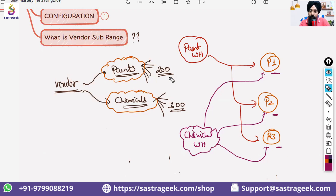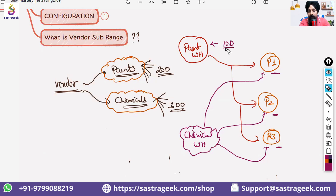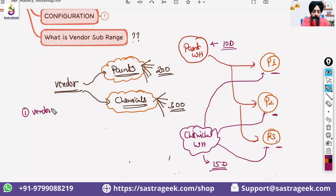If you are buying paints from the vendor, one set of data applies; if you buy chemicals, another set applies. For example, all paints have a delivery time of 10 days and all chemicals have a delivery time of 15 days. You can maintain the delivery time at the vendor level or at the purchase org level, but then you face the question: do you define 10 days or 15 days?